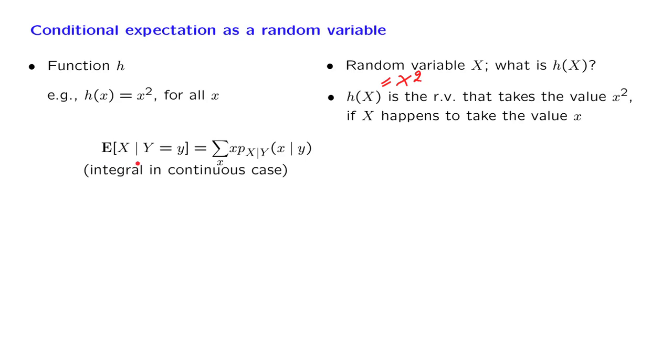Now let us look at this quantity here. We have fixed some particular little y, calculate this quantity, and what we get is a number. It is a number, but the value of that number depends on the choice of little y. If I give you a different little y, then you will get another number for this conditional expectation. This means that this quantity here is really a function of little y, and let us give a name to this function. Let us call this function g.